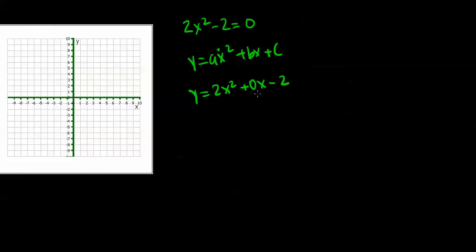We start by finding the axis of symmetry. To do that, we use the formula -b/2a. In this case, b is 0, so the axis of symmetry is 0.